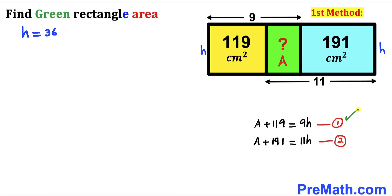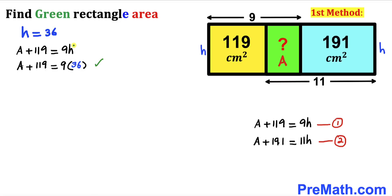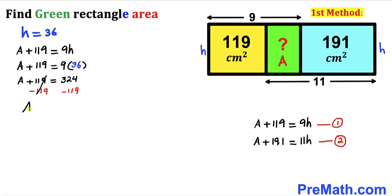Now let's substitute h = 36 back into equation one. Replacing h with 36 gives us a + 119 = 9 × 36 = 324. Subtracting 119 from both sides, our area 'a' turns out to be 205 centimeter square. So the area of the green rectangle is 205 cm² by the first method.